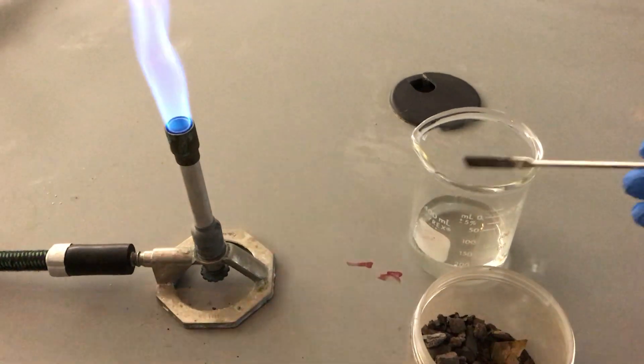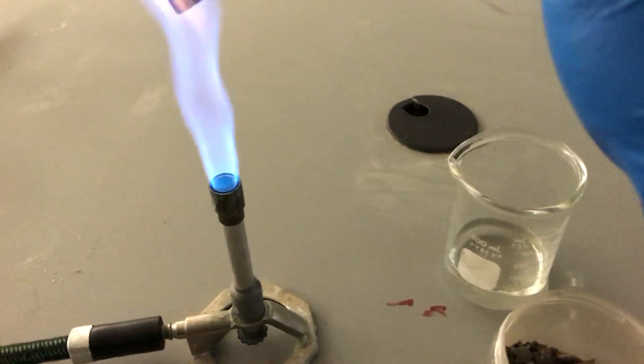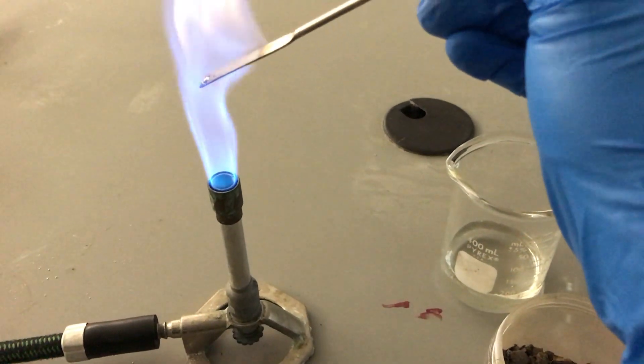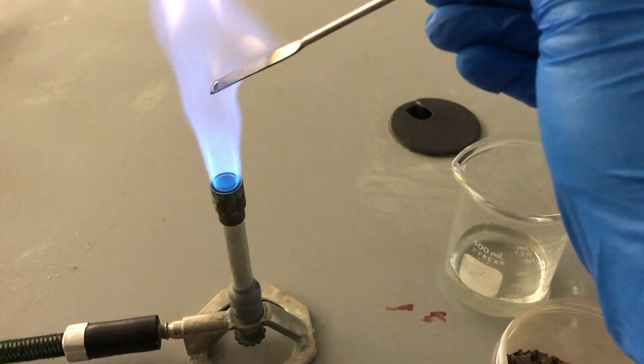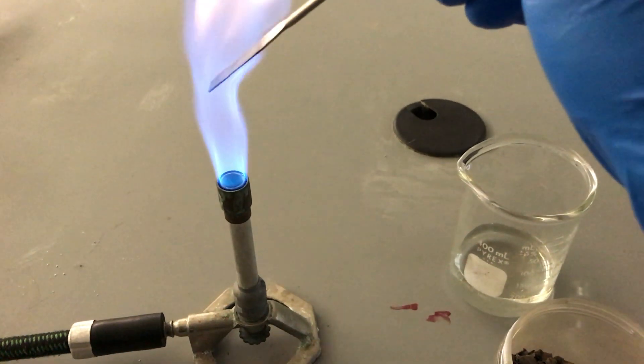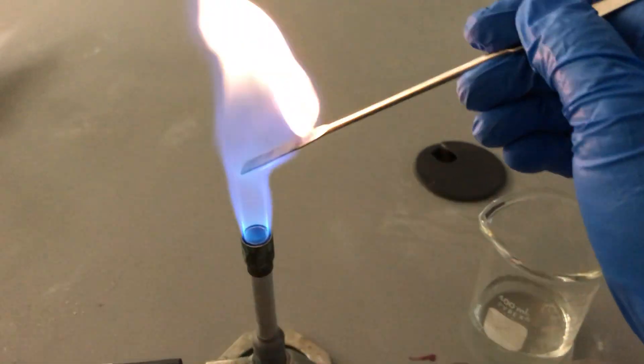And then we're going to do the same thing with our suspect sample. So once again we're going to flame off our spatula, making sure it's nice and dry.